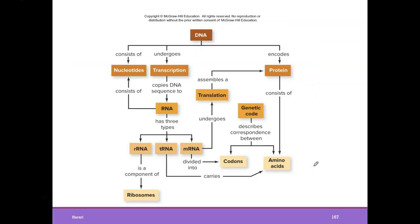That brings us to the end of chapter 7. DNA consists of nucleotides, as does RNA. DNA undergoes transcription, in which DNA is copied into RNA. RNA has three types: rRNA is a component of ribosomes, tRNA carries amino acids to ribosomes, and mRNA is divided into codons. mRNA undergoes translation at a ribosome to assemble a protein. DNA encodes all proteins, which are made up of amino acids. The genetic code describes the correspondence between mRNA codons and the amino acids of a protein. Thank you for listening, and I will see you next time for chapter 8.